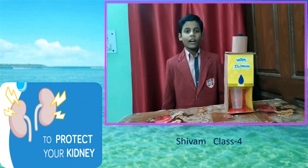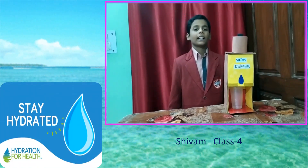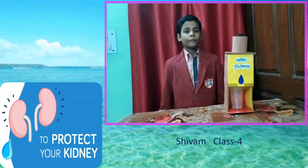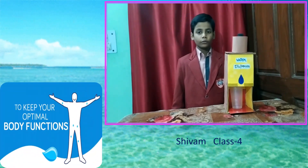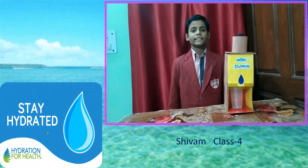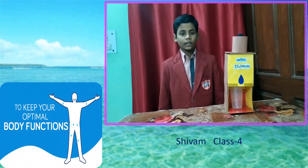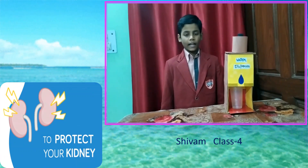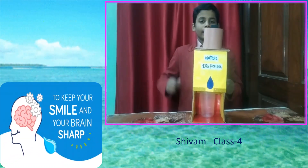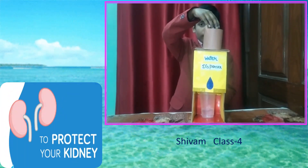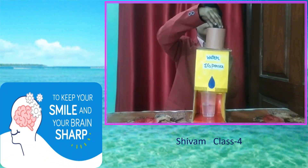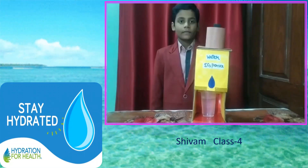The water dispenser is used to provide easy access to drinking water. A water dispenser has become a necessary part of society and can be useful in many situations. Some offices prefer to have a water dispenser because it provides clients and employees with convenient access to water without having to take extended breaks or drive to the store. I have made this model to show how a water dispenser works. When I loosen the cap of the bottle, the water flows down, and when I tighten the cap of the bottle, the water stops flowing.